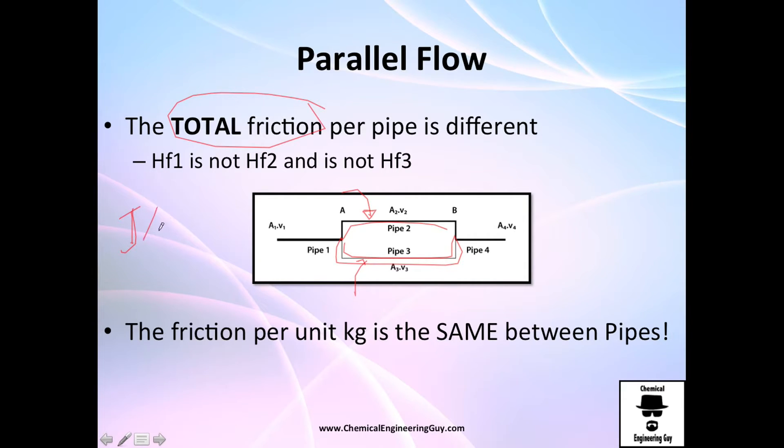The total friction—how many joules or kilojoules of energy you lose—may differ. But one very important thing is that the friction loss per unit mass is the same. That's perfect—we can relate another equation.